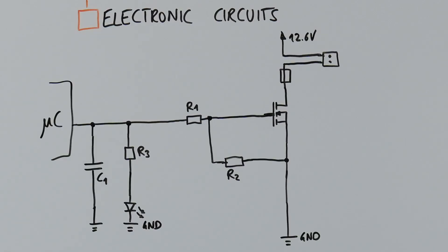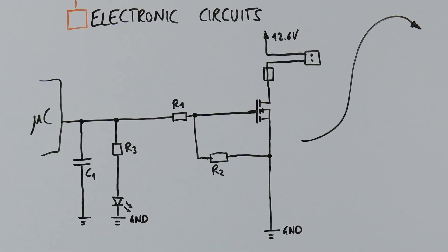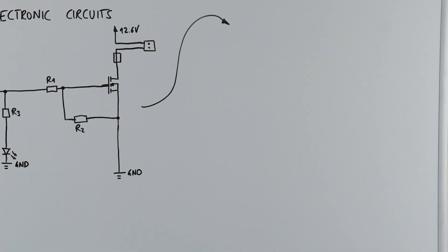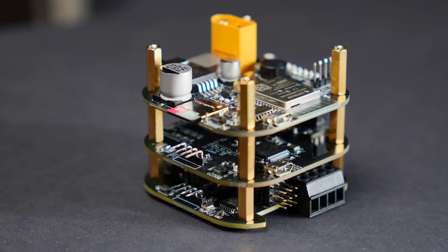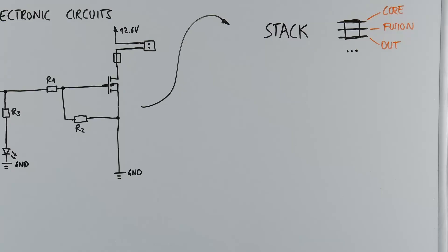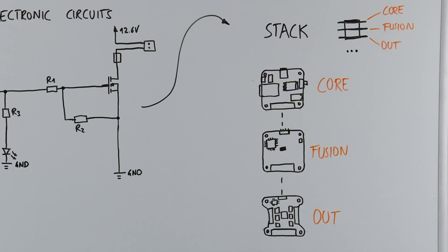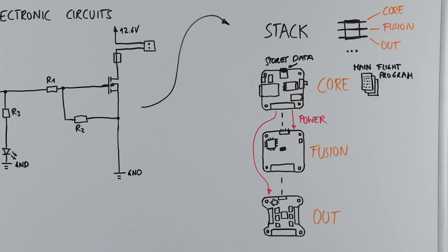To illustrate how these components come together in a practical application, let's examine our latest flight computer stack, specifically Stack Core. This central board in the stack system is crucial as it provides power to the other boards, runs the main flight program, stores flight data and handles telemetry.